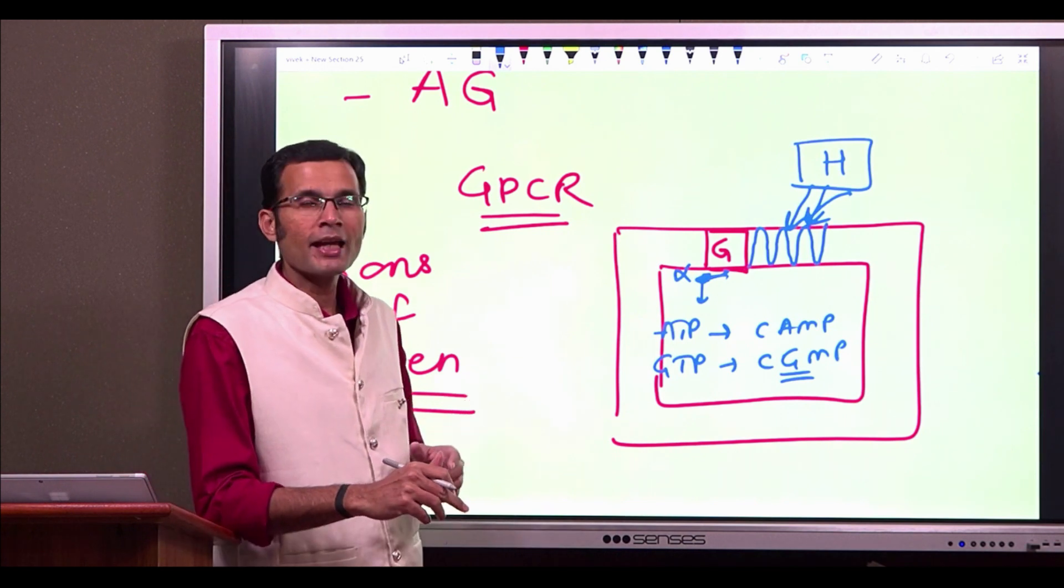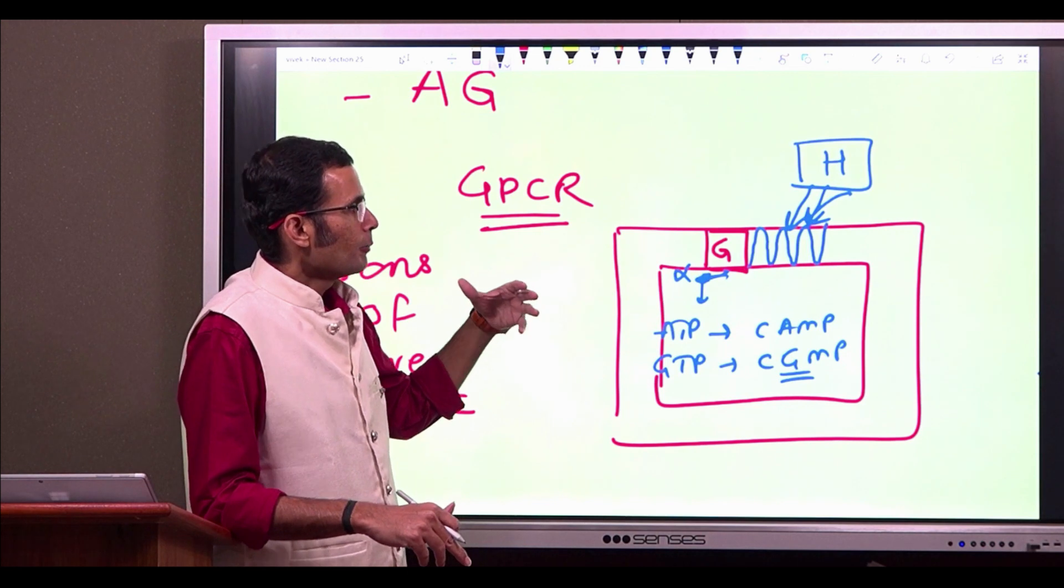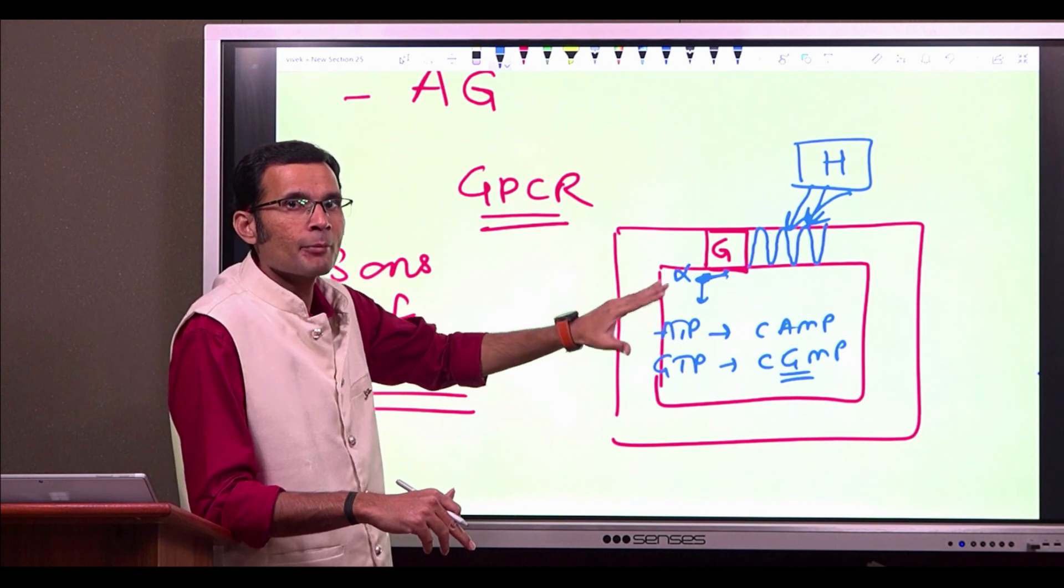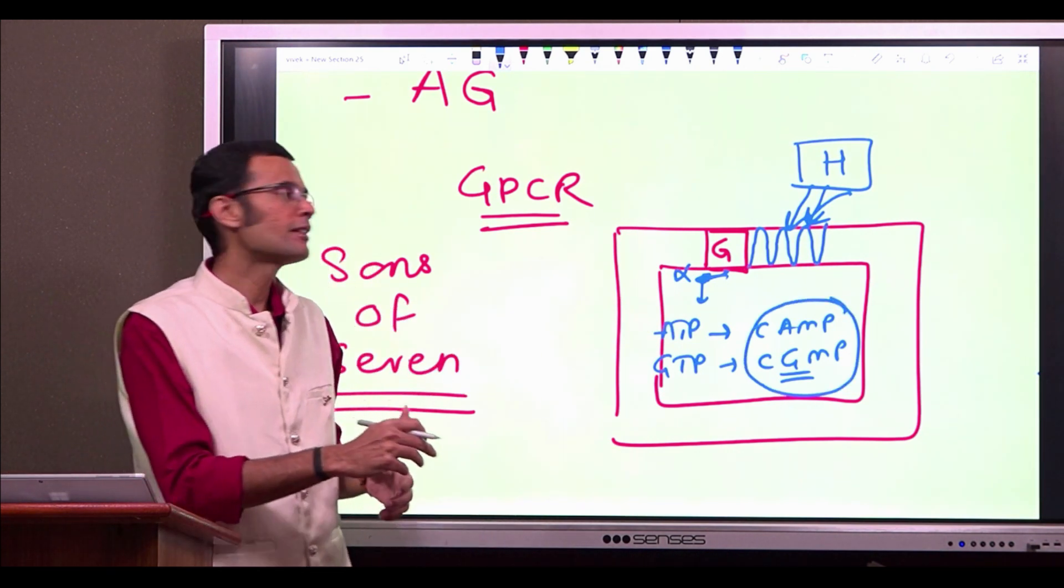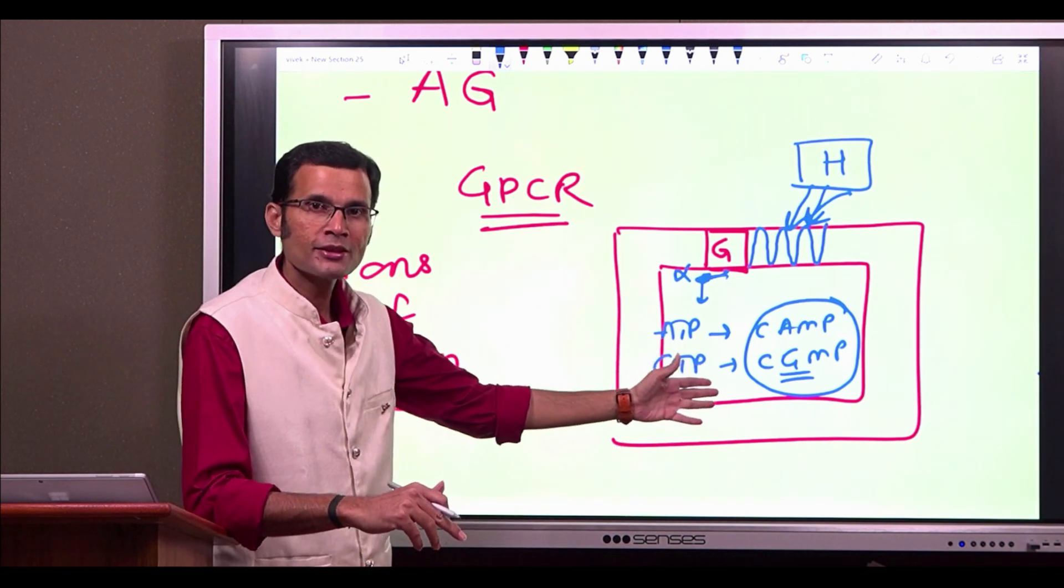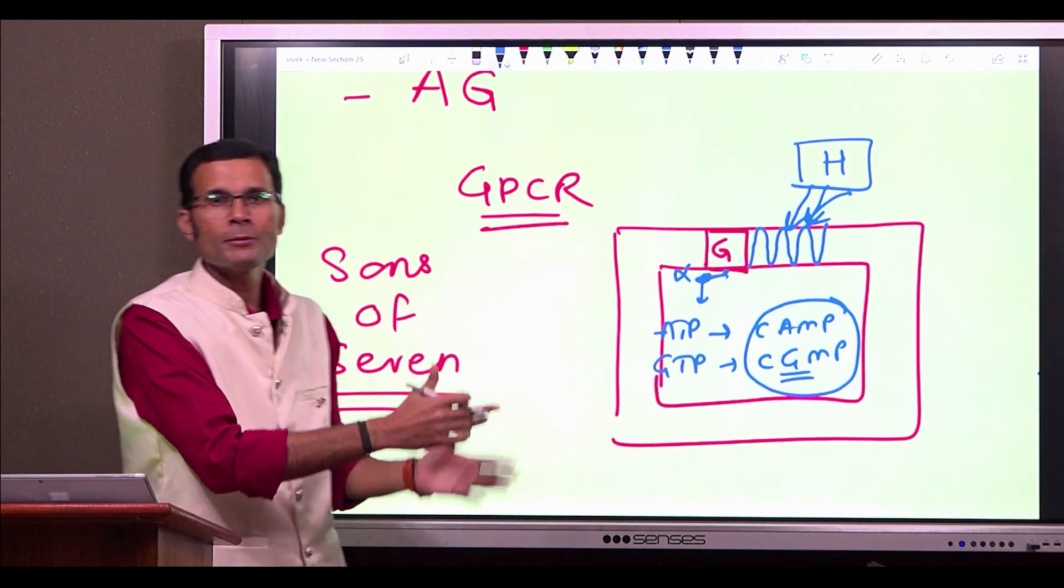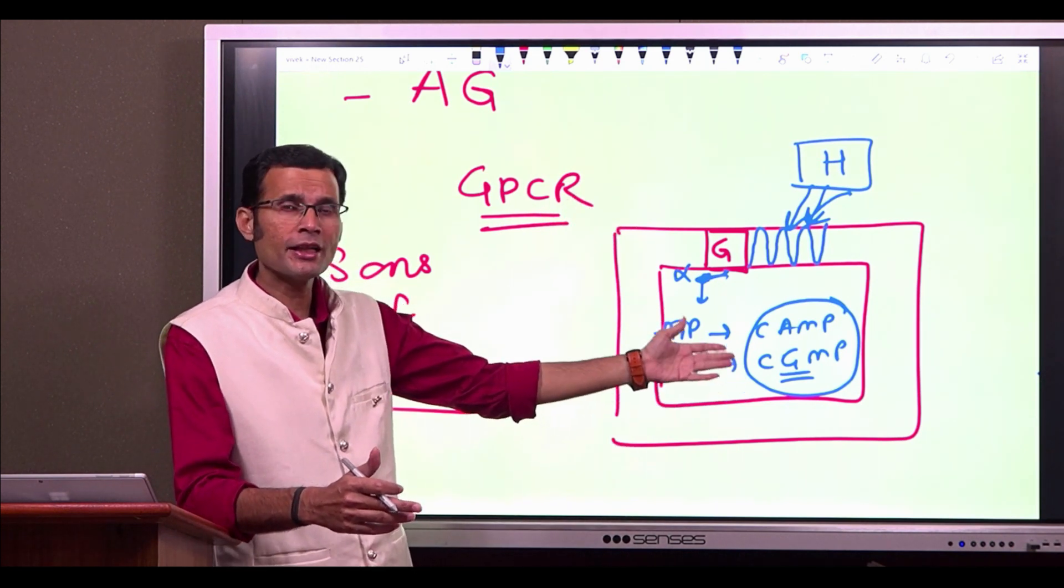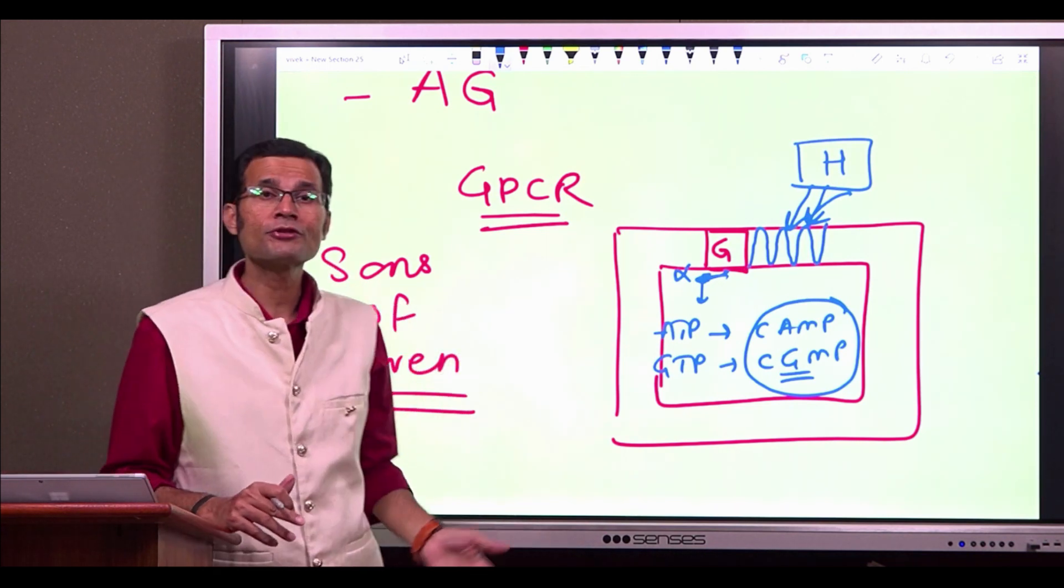So these cyclic AMP and cyclic GMP, the intracellular products which are formed because of the combination of the ligand with that seven transmembrane segments receptor. These have been sometimes described as sons of seven, sons, the kids or sons of seven, seven transmembrane segment receptor. When hormone combines with that receptor, eventually these intracellular products are formed and they can be sometimes described as sons of seven.